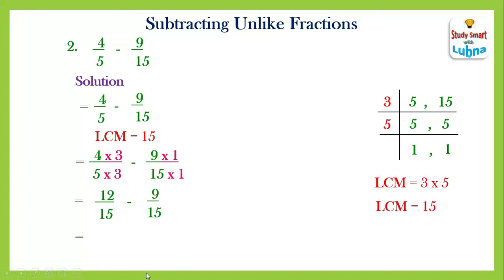After multiplying: four times three is twelve, and five times three is fifteen. Minus nine times one is nine, fifteen times one is fifteen. Now both denominators equal the LCM, fifteen — they have converted into like fractions. We subtract the numerators with fifteen as the common denominator: twelve minus nine upon fifteen equals three upon fifteen. Reducing: three divided by three is one, and fifteen divided by three is five. The final answer is one upon five.